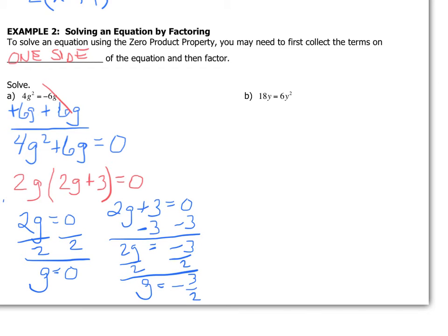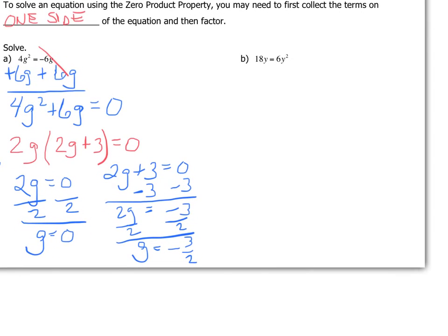So my two solutions for this one, I'm going to come down to the bottom. G is zero or negative 3/2.